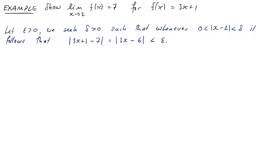When we were working with sequence convergence we were always seeking a capital N. The template for working with the epsilon-delta definition of the limit of a function is almost the same, except now the thing we're seeking is no longer a big N for a sequence — it's a delta for our function.